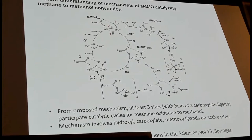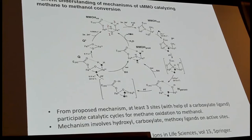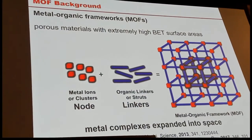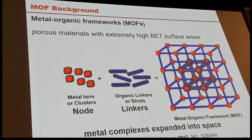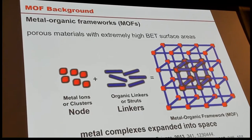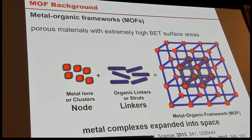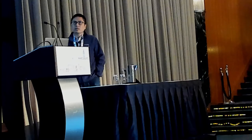People want to mimic the function of enzymes, but most of the time we don't know what we are making. Metal-organic frameworks are a very good platform to mimic the function of enzymes. They are made by metal ions and organic linkers coordinated into a crystalline structure — they can be viewed as metal complexes expanded into space. Because the structure is highly tunable, we can originally tune it by adding functional groups.